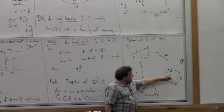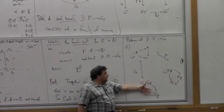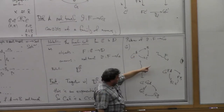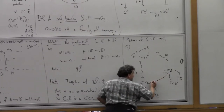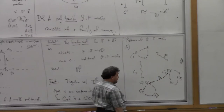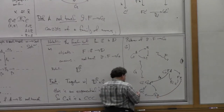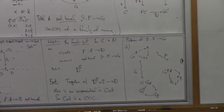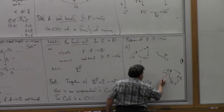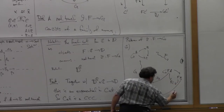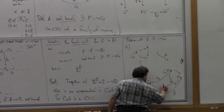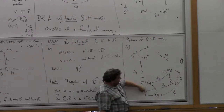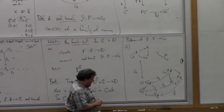The functor F gives me a picture of this category over here in D: F(A), F(B), F(C), and so on, roughly in the same configuration. The functor G gives me a different picture of C over in D. A natural transformation consists of a family of maps over in D connecting the image of F with the image of G in a compatible way. For each A there's a theta_A connecting F(A) to G(A) — these are called the components of the natural transformation. And for B, C as well. All the corresponding diagrams commute.